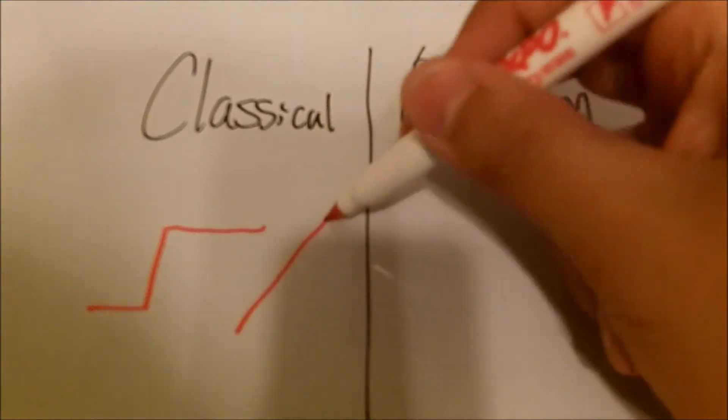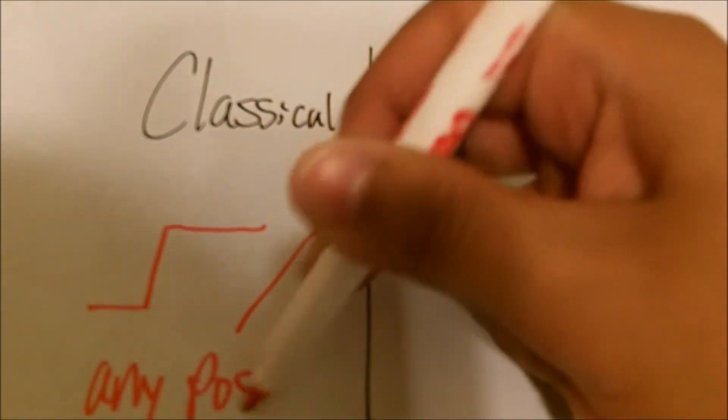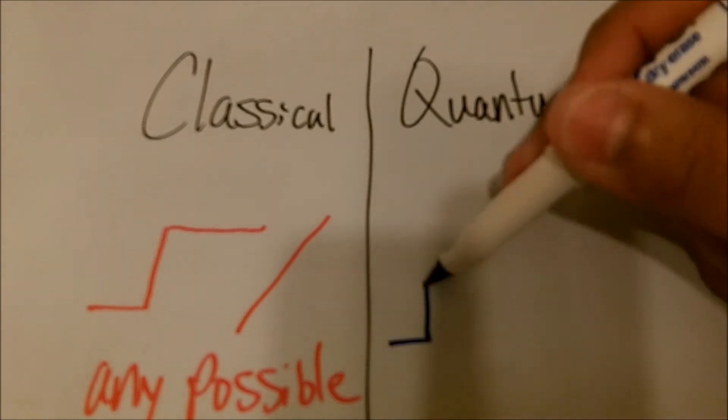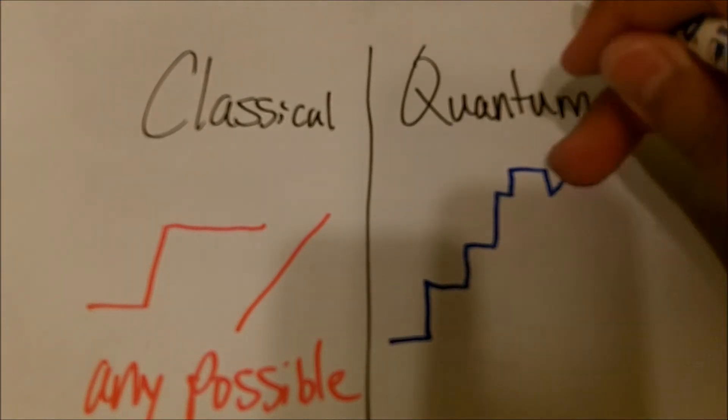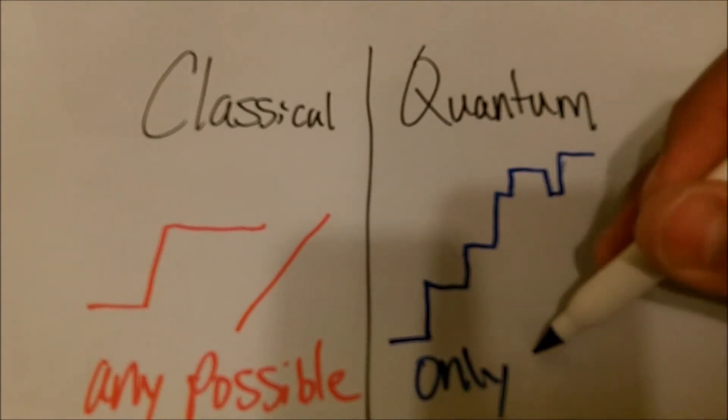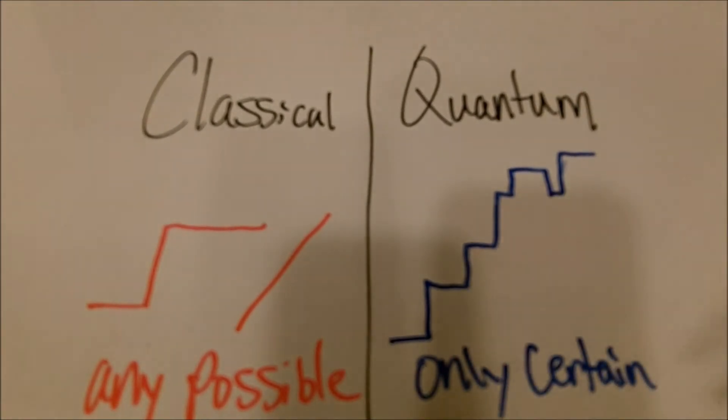Now energy quantization in the classical realm is like that of a ramp. Any possible amount of energy can be quantized. While in the quantum realm it's more like a staircase where each is a different length. Therefore only certain possible amounts of energy can be quantized.